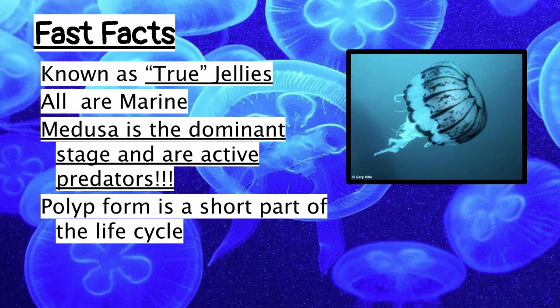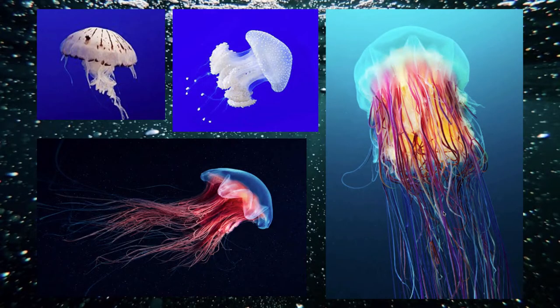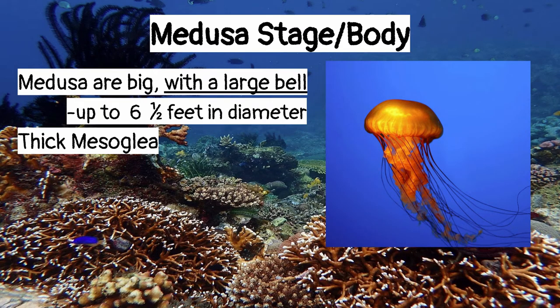The polyp form is a very short portion of their life cycle. Looking at these true jellies, you should notice some key characteristics. Their medusa have really big bells — some can be up to six and a half feet in diameter. The bell is filled with mesoglea, that jelly-like substance that fills cnidarians, and Scyphozoans have a lot of it in their bells.